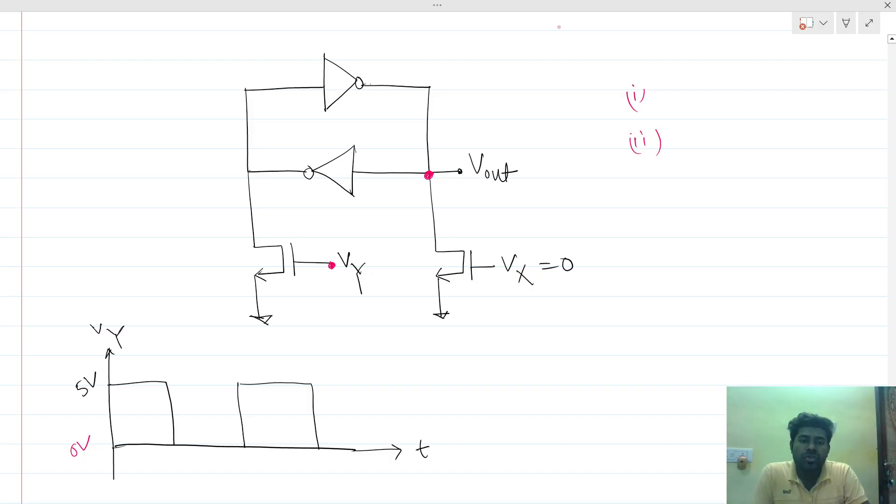We can see that VX is always zero. As this is the NMOS, it cannot be turned on because VGS is always zero and this is always less than VTN. Let's say VTN is one volt, so this MOSFET is never conducting.